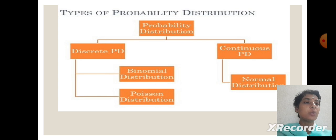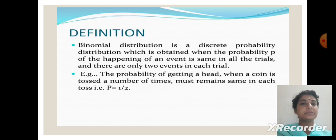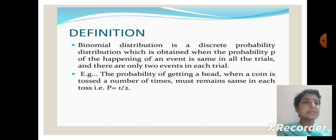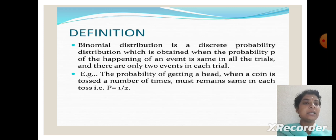We have one continuous distribution, which is normal distribution. The definition of binomial distribution is: binomial distribution is a discrete probability distribution which is obtained when the probability P of the happening of an event is same in all the trials and there are only two outcomes in each trial.